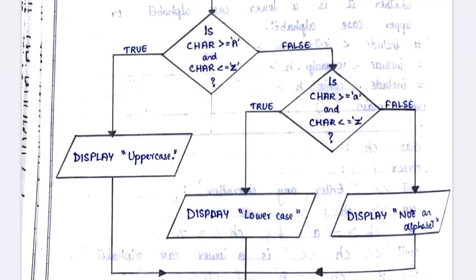Let me take an example: capital letter 'P'. Is capital 'P' between capital 'A' and 'Z'? Yes, it comes between 'A' and 'Z', so the condition is true. It comes to the true part and displays 'it is uppercase', then comes out of the loop.